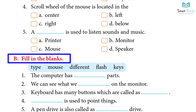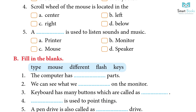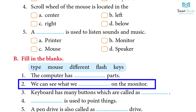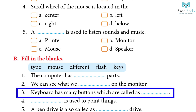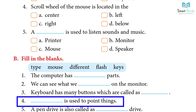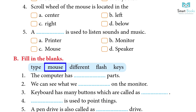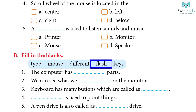Fill in the blanks: The computer has different parts. We can see what we type on the monitor. The keyboard has many buttons which are called keys. A mouse is used to point at things. A pen drive is also called a flash drive.